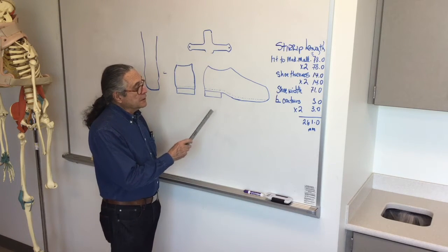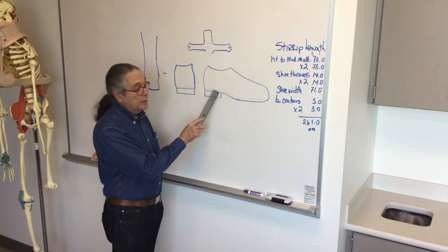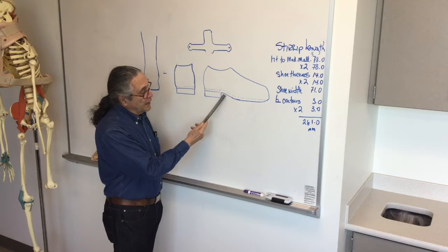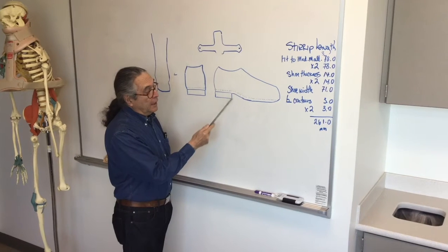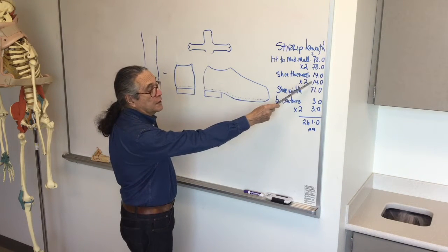We need the thickness of the shoe taken at the breast of the heel, which is just anterior to where the heel stops. It's this dimension from the outsole to the insole. And on the shoe that we're going to be using, that measurement is 14 millimeters.